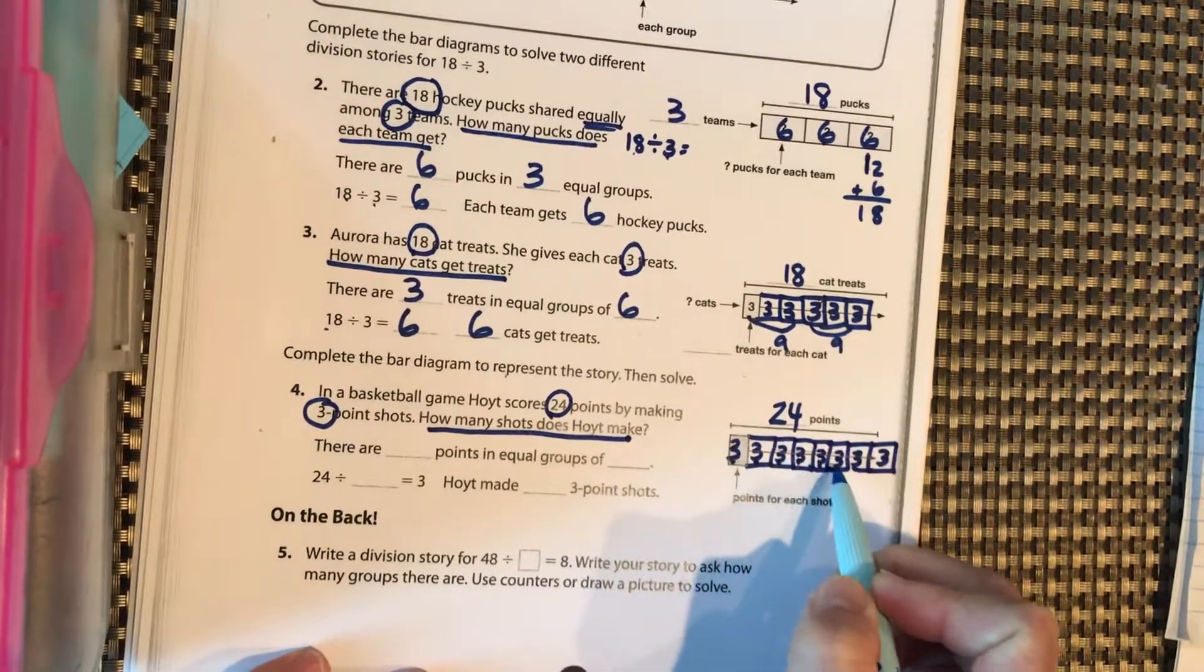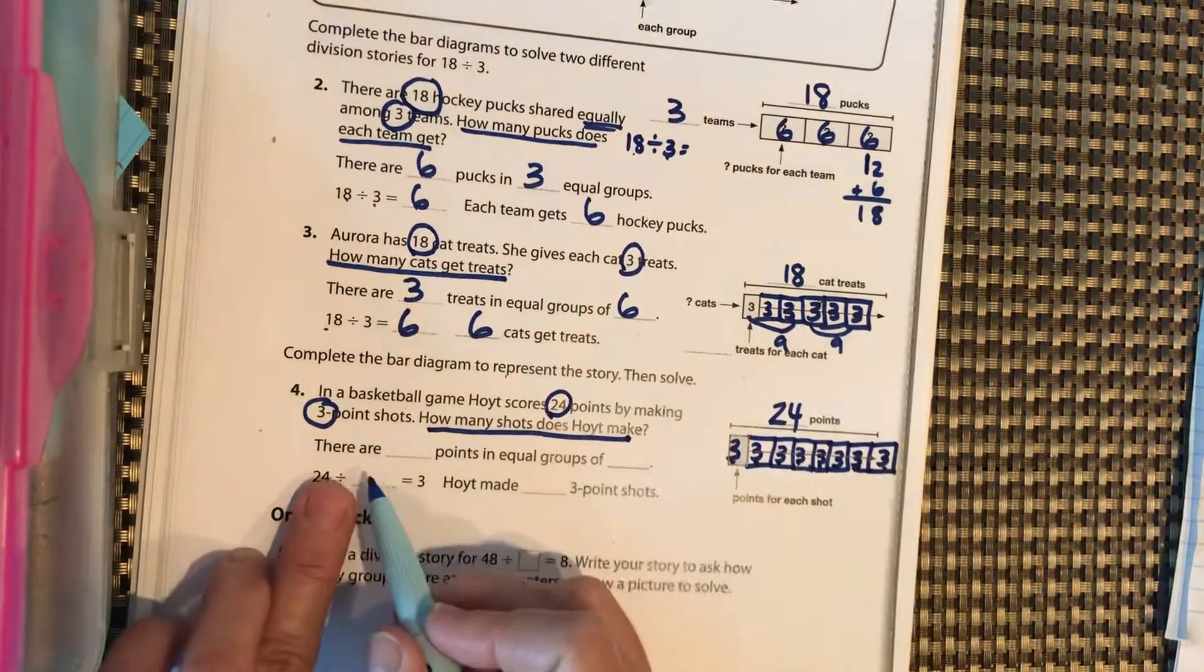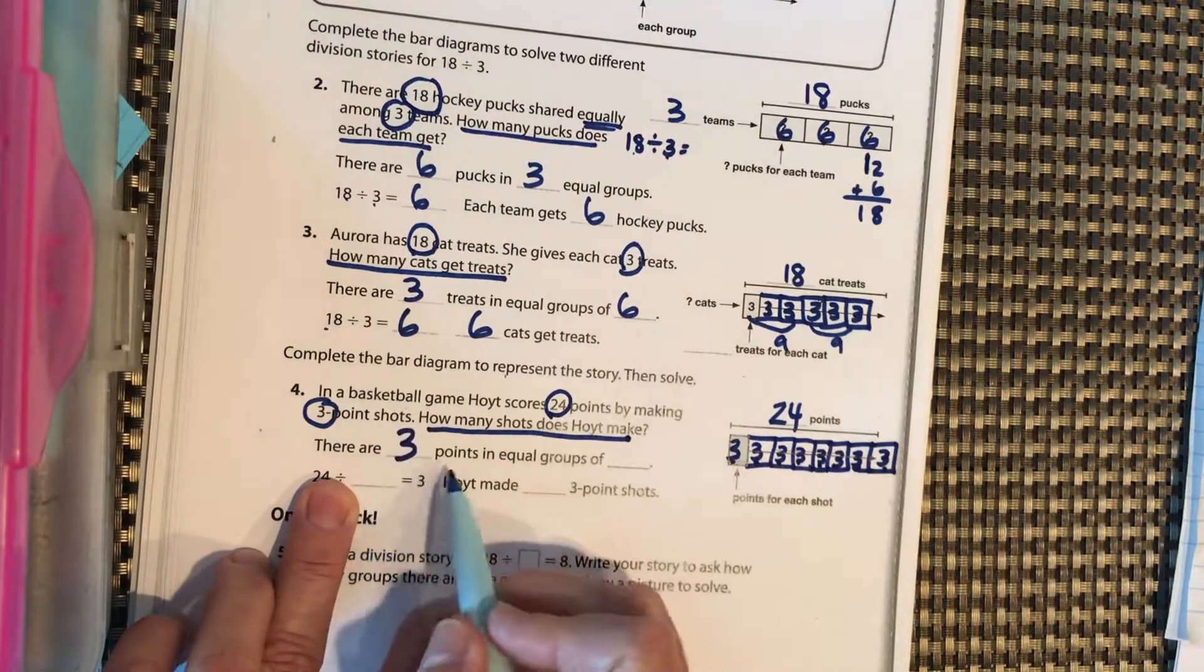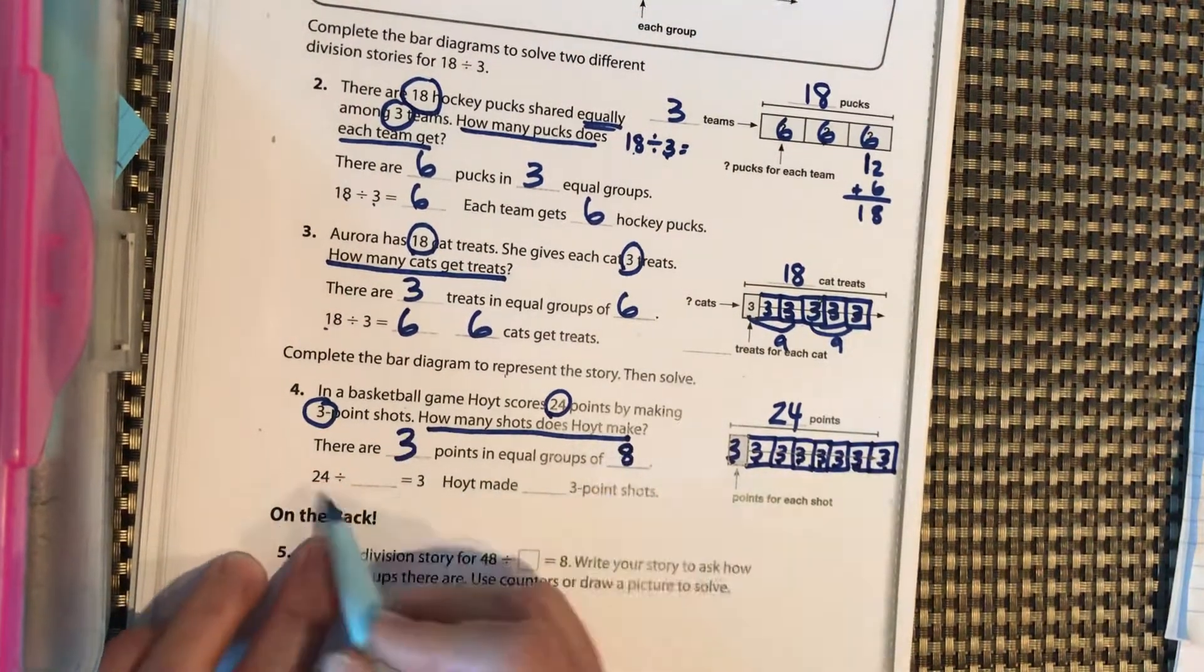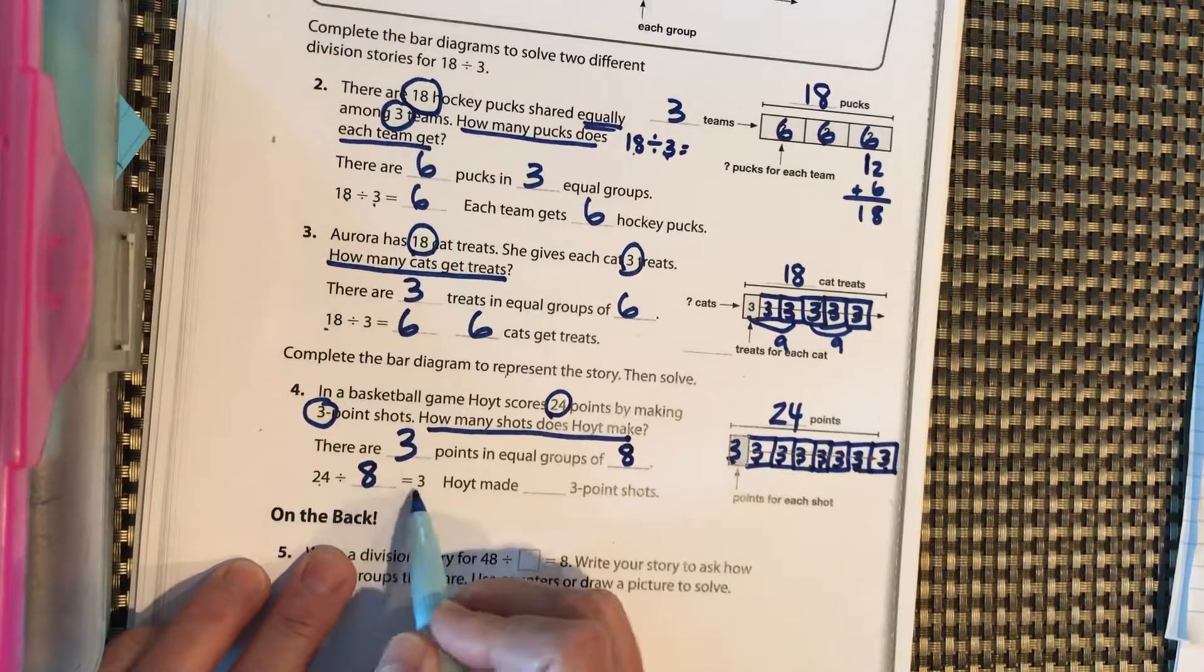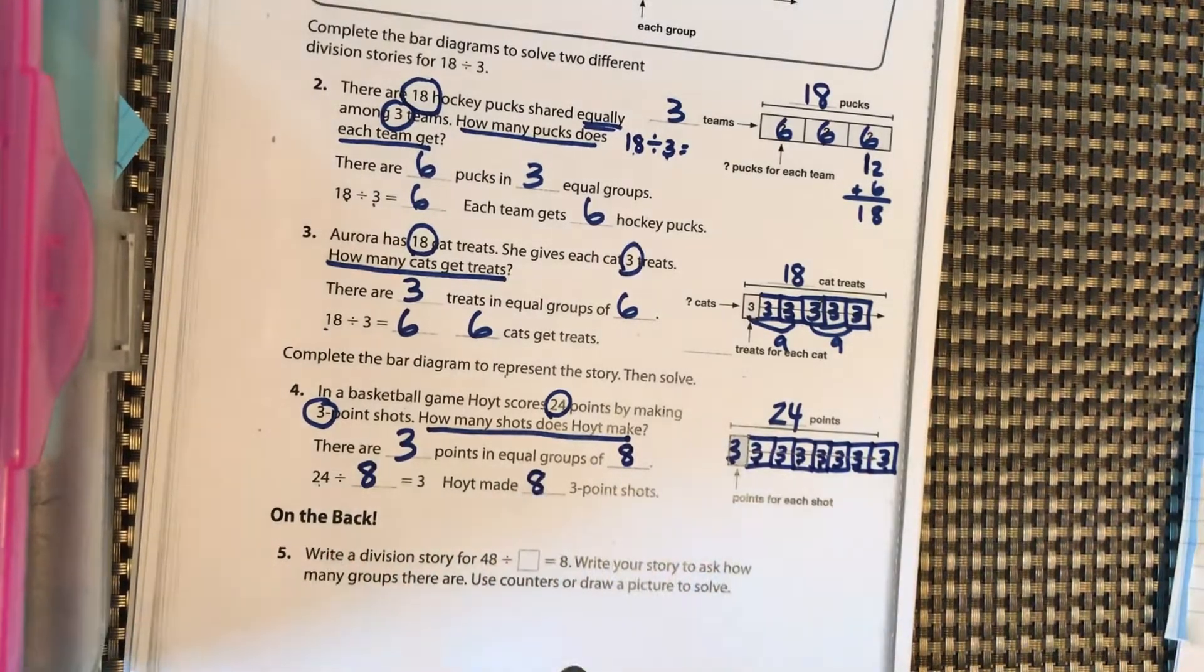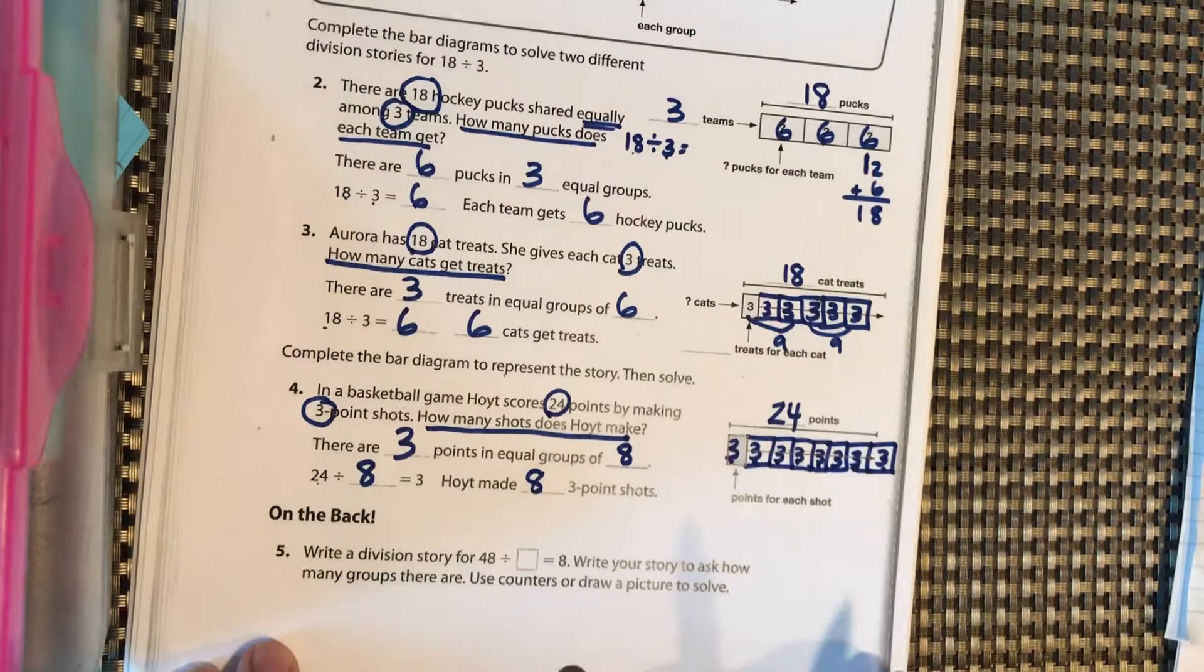One, two, three, four, five, six, seven, eight. There are three points in equal groups of eight. 24 divided by eight equals three. He makes eight three-point shots.